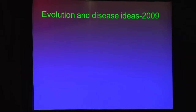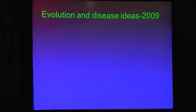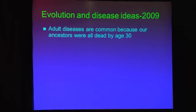2009 was a great year, and if you really want to be famous long after you're dead, I recommend that you make your greatest book published when you're 50 years old, so people can celebrate the 200th anniversary of your birth and the 150th anniversary of your great book at the same time. That is Darwin's accomplishment. 2009 was 150 years after publication of The Origin of Species, and I had the privilege of going all over the world to talk at various conferences about evolution and medicine. It was a wonderful experience, but it was also very disturbing.